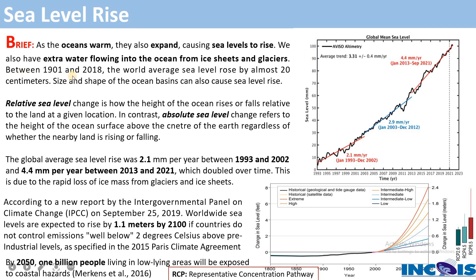Between 1901 and 2018, the global average sea level rose by almost 20 centimeters. Moreover, thermal expansion and melting of glaciers or land ice are not the only causes — the size and shape of the ocean basins also contribute to sea level rise.